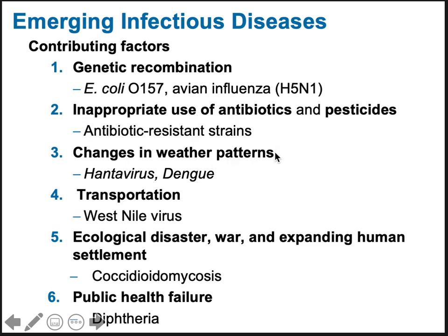Changes in weather patterns definitely contribute — especially during ecological disasters like hurricanes and earthquakes. Seasonal patterns matter too: vectors like mosquitoes are more common in warm, moist weather, while influenza is more common in cold weather. Rapid transportation of people and goods means diseases have the potential to spread around the world very quickly — we saw that with the current pandemic.